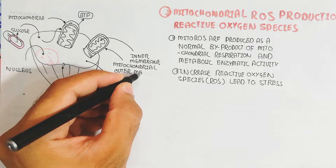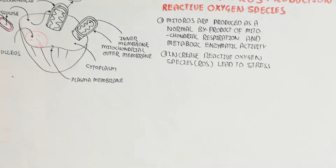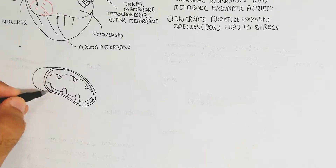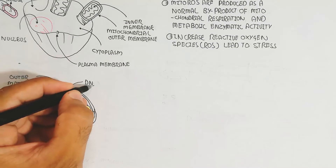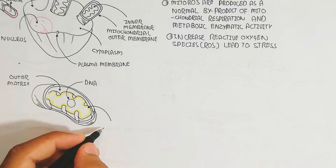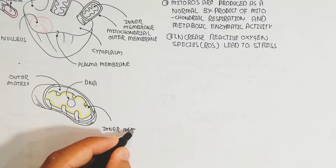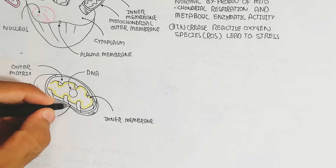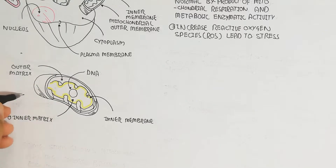Here is the inner membrane and outer membrane of the mitochondria. ATP — adenosine triphosphate — is very important for providing energy throughout the body, and every cell contains mitochondria. The outer matrix and inner matrix are shown here — the Krebs cycle occurs inside the inner matrix, and this is also where the circular DNA is located.